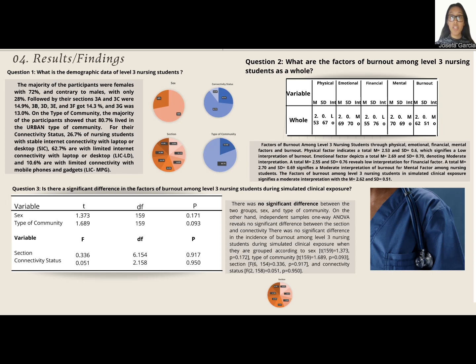On the type of community, the majority of participants showed that 80.7% live in the urban type of community. For their connectivity status, 26.7% of nursing students had stable internet connectivity with laptop or desktop.